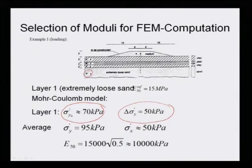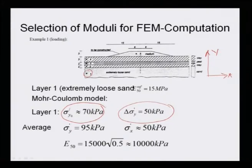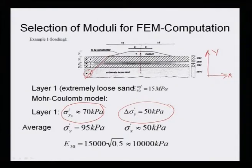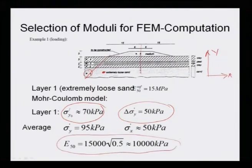Sigma_y is the overburden pressure at the middle of the extremely loose sand layer, found as gamma_1*h_1 + gamma_2*h_2 + gamma_3*h_3 at the mid-level. Delta sigma prime is the increase in stress due to embankment construction. Based on these values, E50 has been found to be 10,000 kPa, and this is to be used for APM modeling.